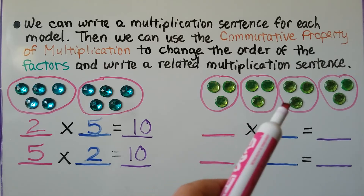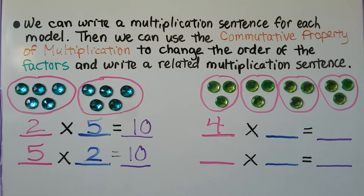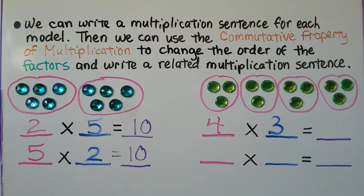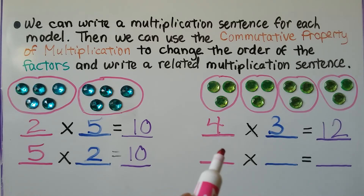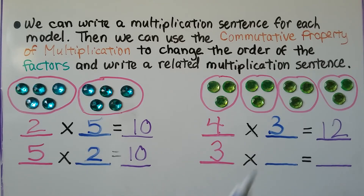For this one, we have 1, 2, 3, 4 groups, and there's 3 in each group. 4 times 3 is equal to 12. We can write a related multiplication sentence, changing the order using the commutative property of multiplication. Because the 4 was first and the 3 was second, we put the 3 here now, and the missing factor is the 4. 4 times 3 is equal to 12, so 3 times 4 is equal to 12. Changing the order, the product will stay the same.